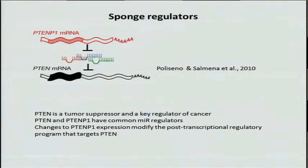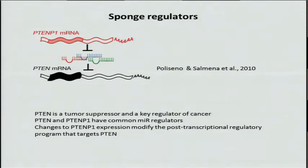PTENP1 is probably the most well-known sponge regulator. PTENP1 is a pseudogene of PTEN, a known tumor suppressor. PTENP1 and PTEN share high homology in their 3' UTRs and are targeted by many of the same microRNAs. What Poliseno and Salmena argued was that PTENP1 overexpression attracts microRNAs that would otherwise be free to target PTEN and therefore increases PTEN expression. Similarly, downregulation of PTENP1 releases microRNAs that are now free to target PTEN, reducing its expression.